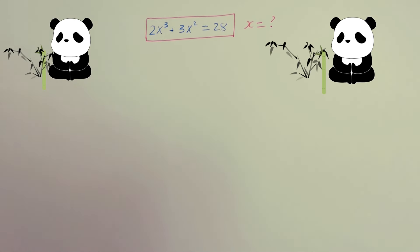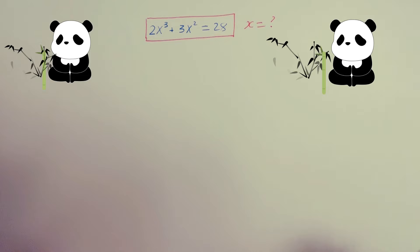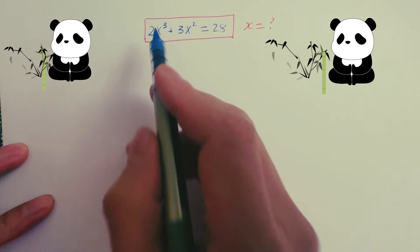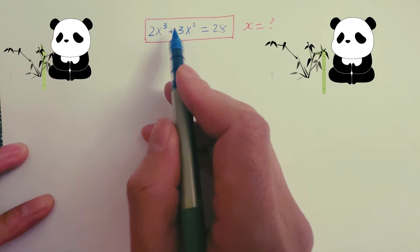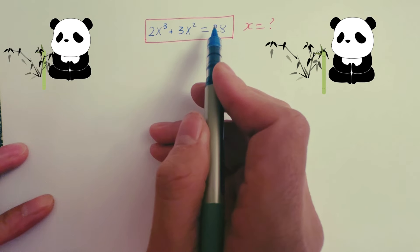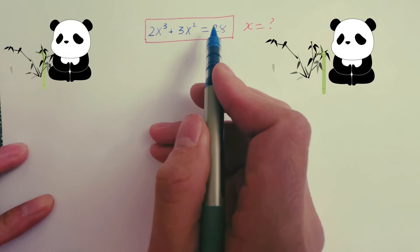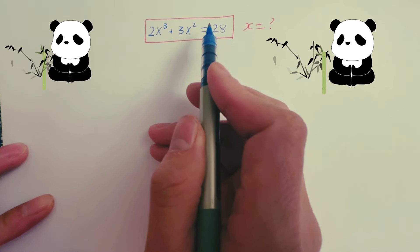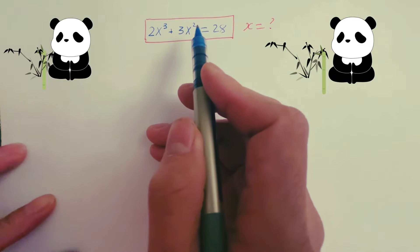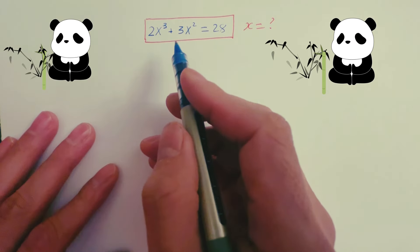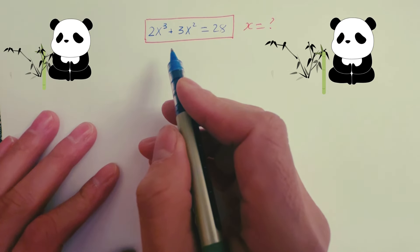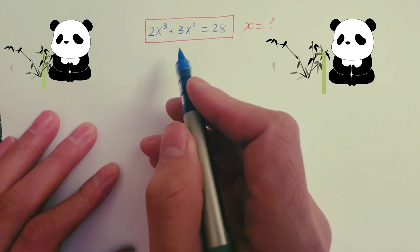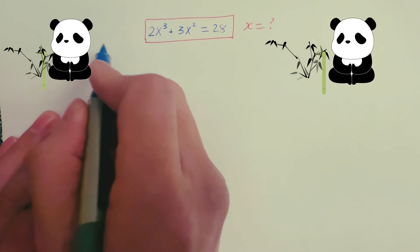Hi everyone. Today I got the equation 2x cubed plus 3x squared equals 28, and I will show you how to find the value of x for this equation. I will show you my solution for sorting out the equation.